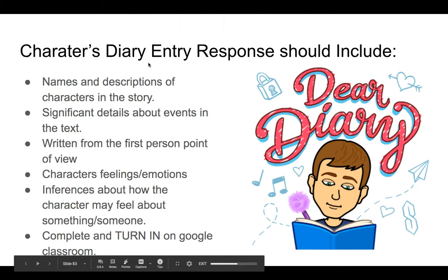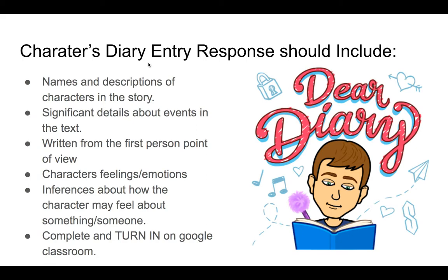Here are some things that I think are important to include, and that I'll be looking for in your writing. I recommend you have this screen open as you're writing, maybe in another window, so you can use it as a checklist: names and descriptions of characters in the story; significant details about events in the text; written from the first person point of view — that means you're actually pretending to be one of the characters and writing it as if you were them; the characters' feelings and emotions; inferences about how the character may feel about someone or something. And then finally, complete and turn it in on Google Classroom.